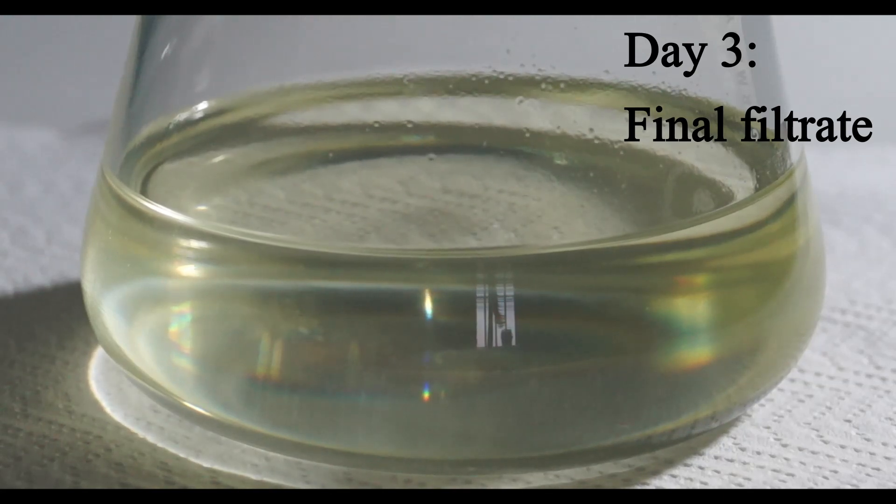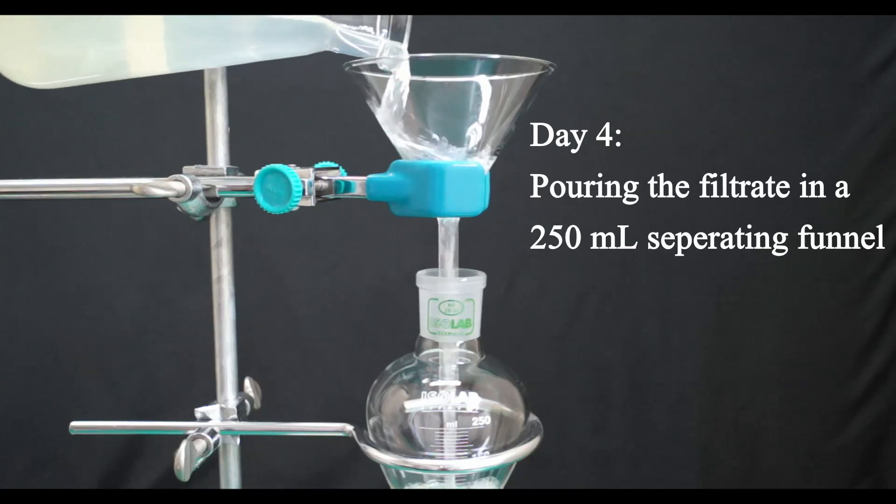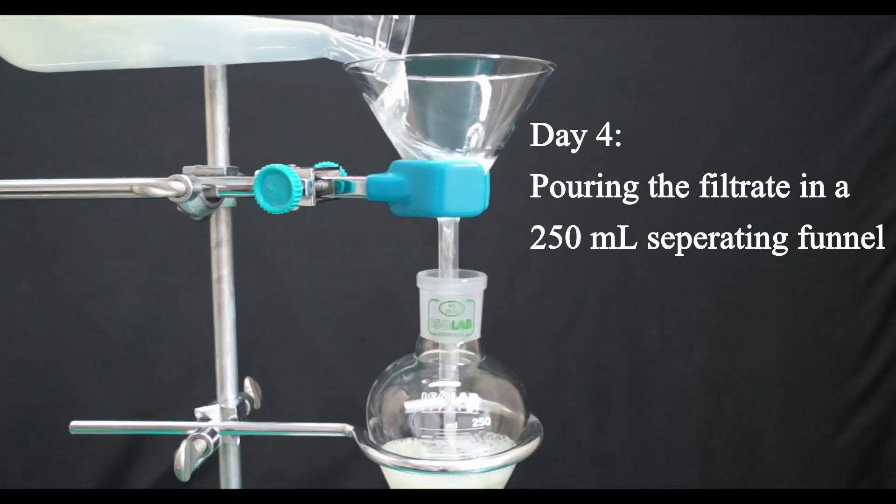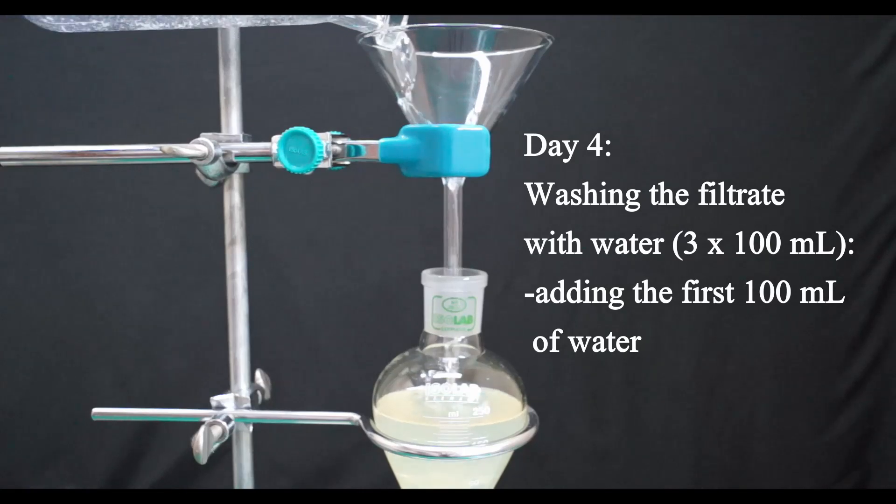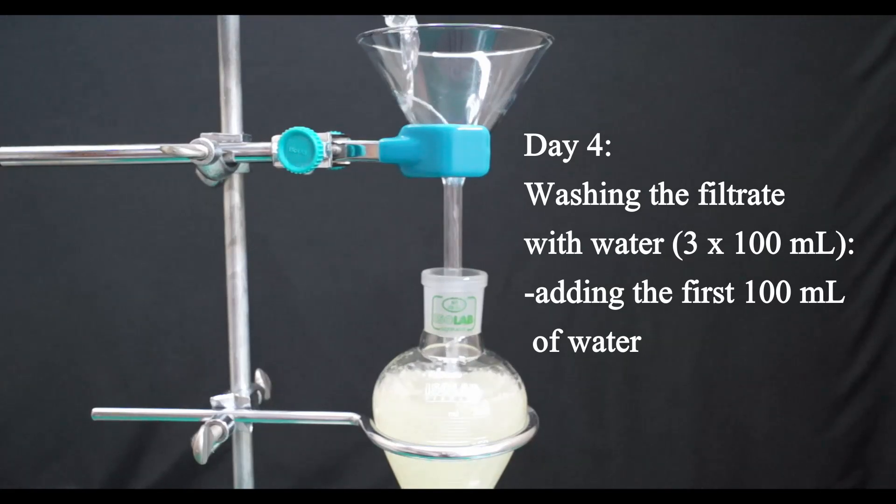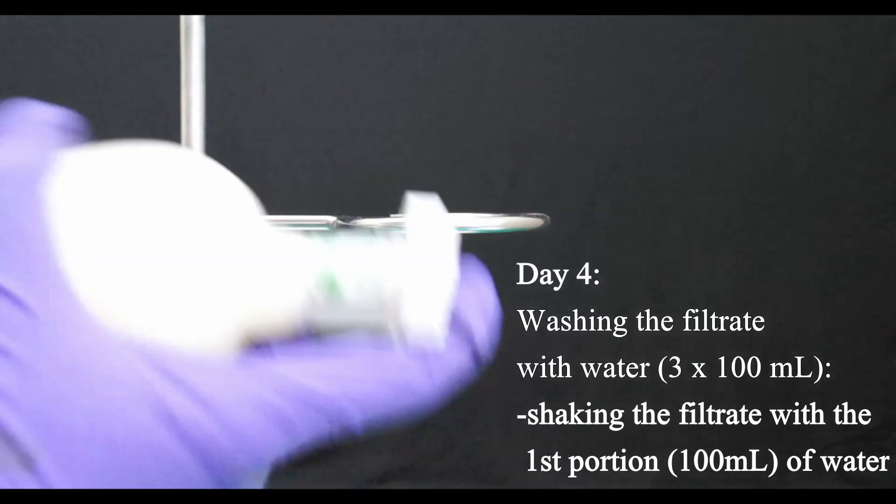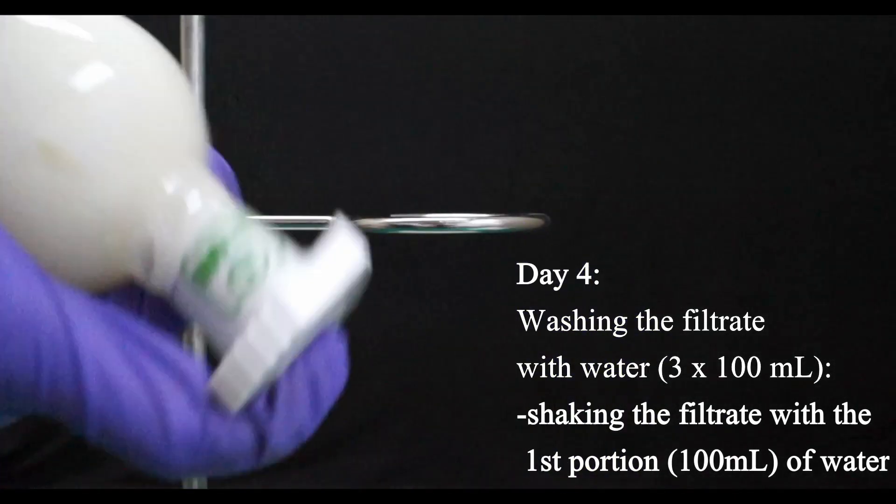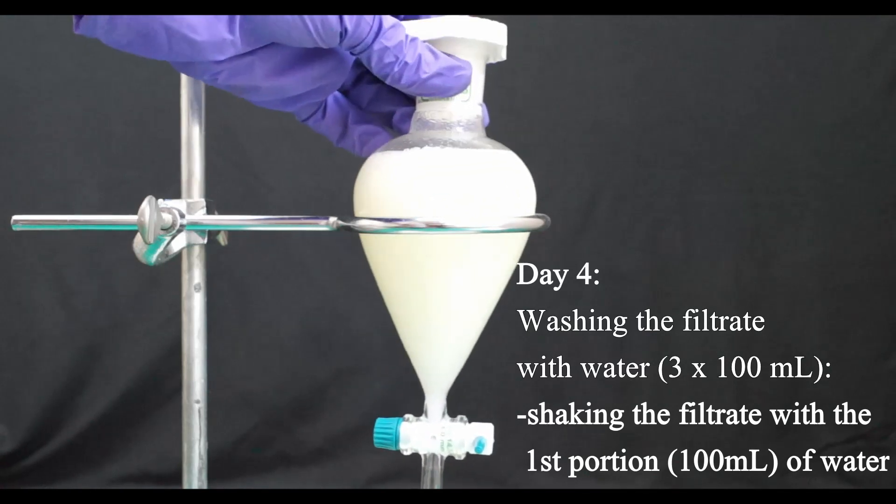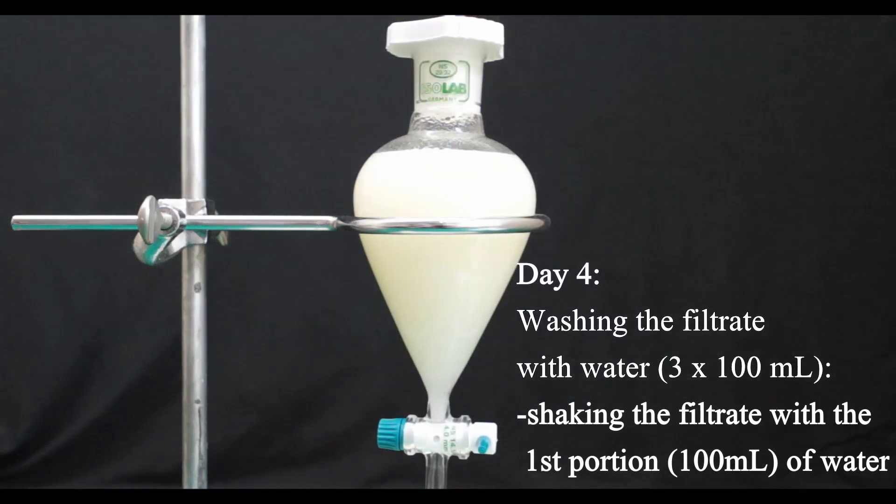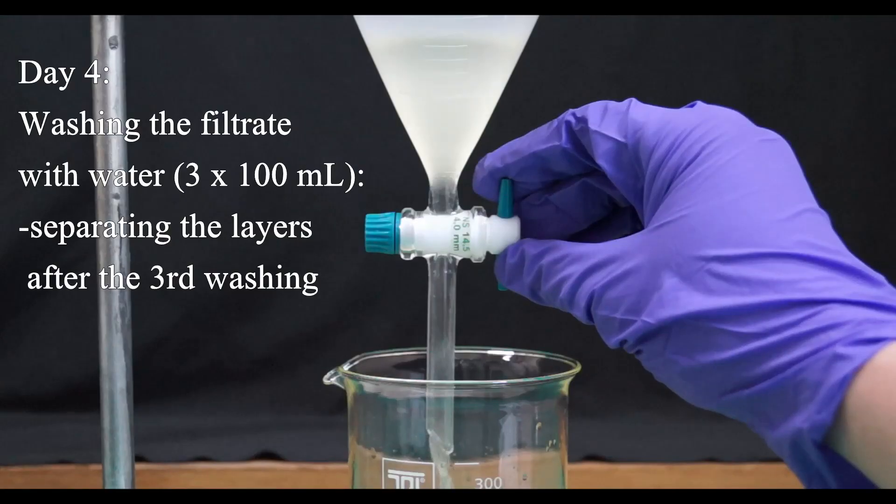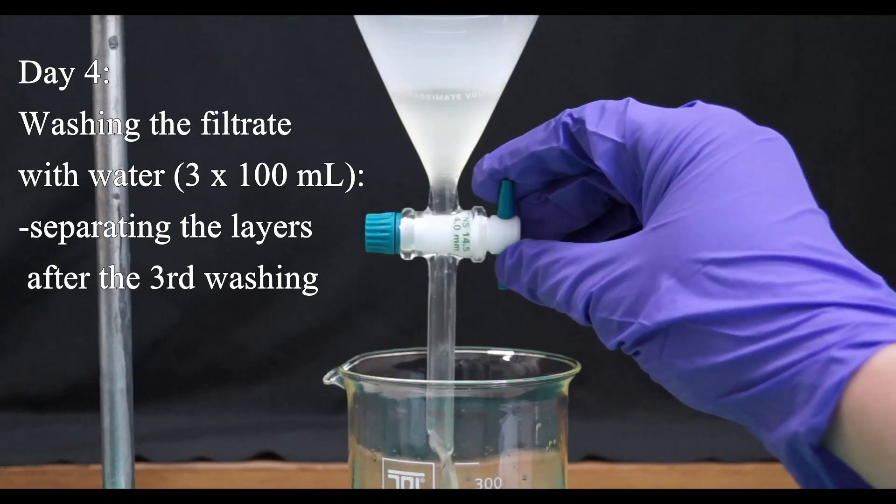After filtering the reaction mixture for the fourth and final time, I poured the filtrate into a 250 ml separating funnel. I added 100 ml of water to the filtrate, capped the separating funnel, shaken it vigorously, then waited for the phases to separate. The filtrate, or the organic phase, is the bottom layer. After removing the water and putting the washed organic phase back into the separating funnel, I repeated this procedure two more times. Washing the organic phase with 100 ml of water each time.